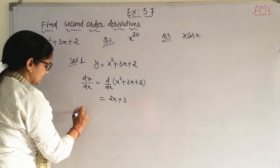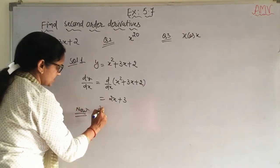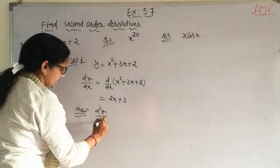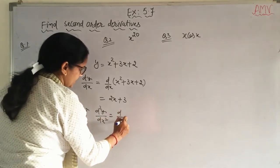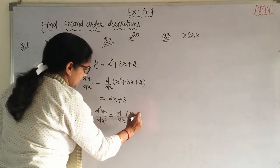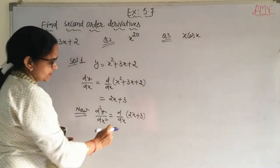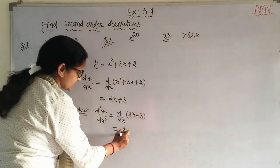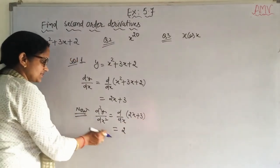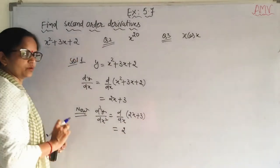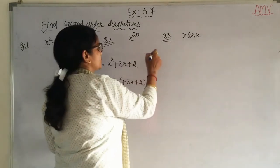And now for the second order derivative, it is d²y/dx² = d/dx of (2x + 3). Derivative of 2x is 2, and derivative of 3 is 0. So the answer is 2 only. Move to the next question.